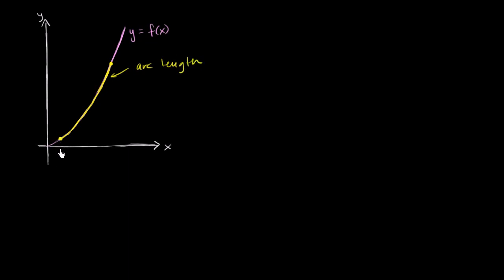We could think about it as, okay, that's going to be from x equals a to x equals b along this curve. So how could we do it?